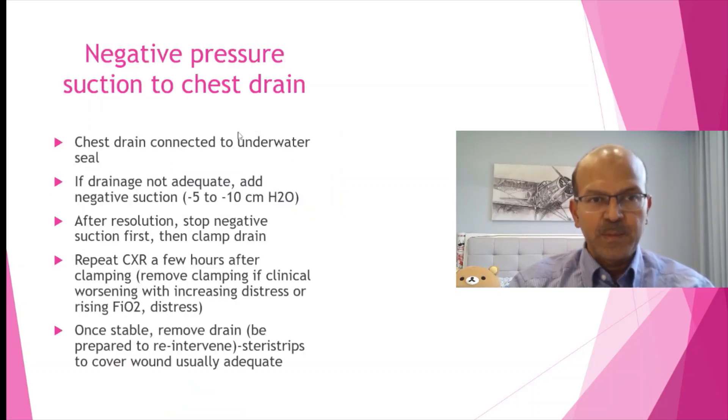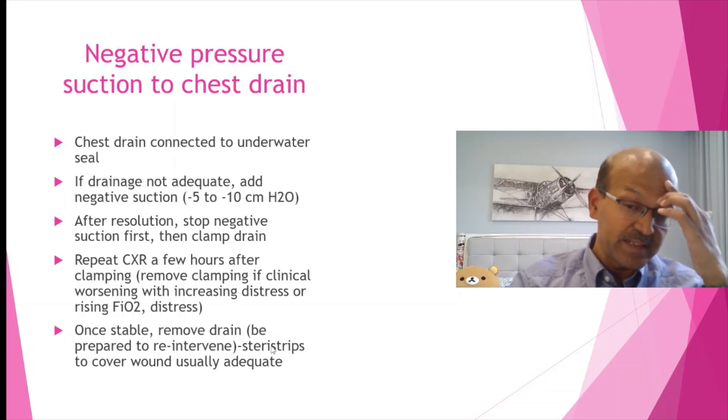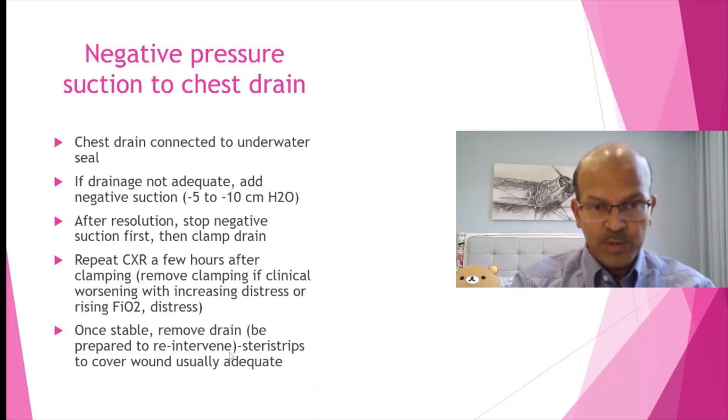Just to recap again: the chest drain is connected to the underwater seal, and you consider adding negative suction pressure of minus 5 to minus 10 cm of water. You first stop the negative suction, then you clamp the drain, and you repeat the chest x-ray before you remove. If there is worsening clinically, even before you do the x-ray, you don't need an x-ray, you just reopen the drain and wait. How long you wait depends on the case. Some cases do get into a bronchopleural fistula stage where you need to be really patient and you have to educate the family that it is going to take time to heal. Once it's removed, you don't really need a stitch. Just sterile strips to cover the small wound should be adequate.